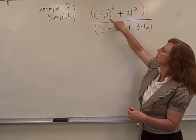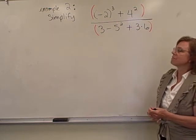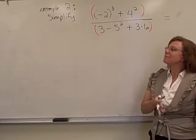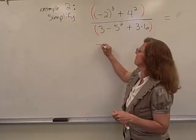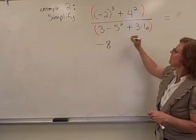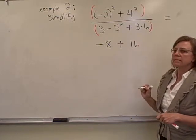up here on the top, I need to take care of my exponents. So, negative 2 to the third power. So I have negative 2 times negative 2 times negative 2, so that's going to give me a negative 8, and then I will need to add to that 4 squared, so that's just 4 times 4, which is 16,